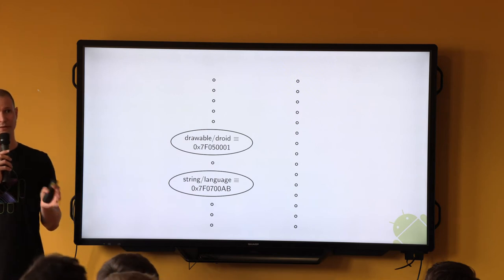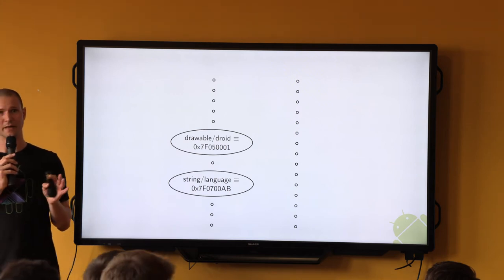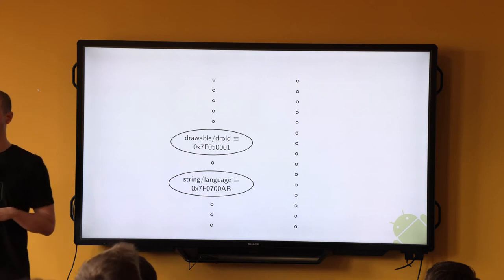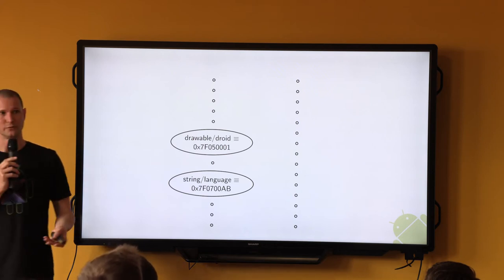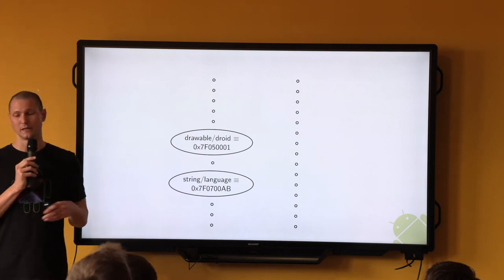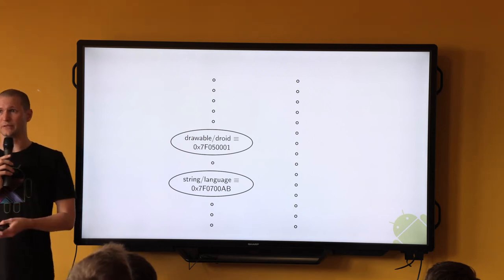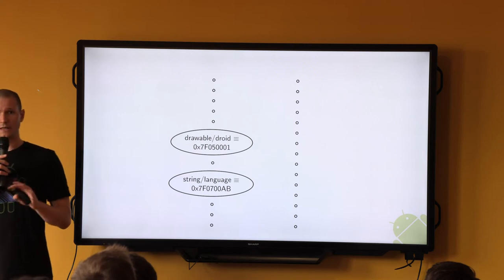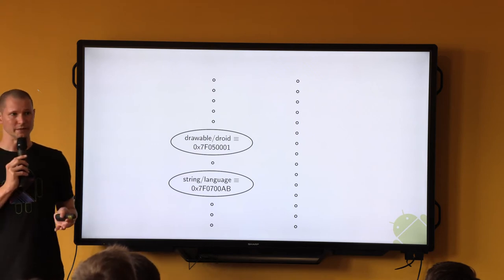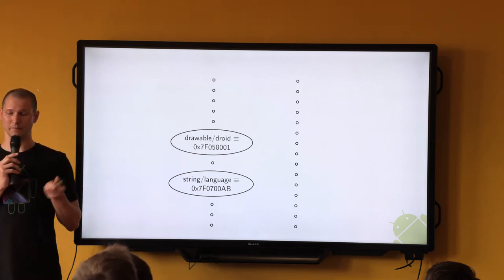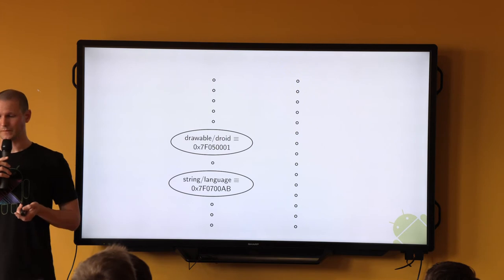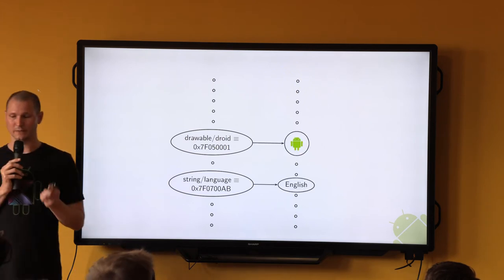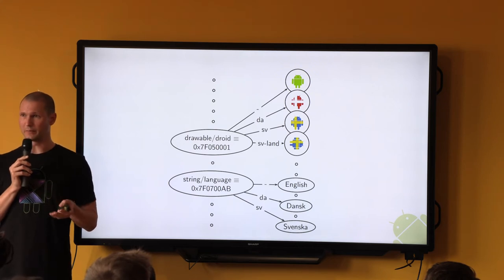So far we've talked about how the R class maps the types and names to the numerical identifiers. When we code we tend to think of types and names, and the runtime uses the numerical identifiers for performance reasons. Either way, these are keys in a mapping — and in the simplest case it's a one-to-one mapping, but it can also be a one-to-many mapping.